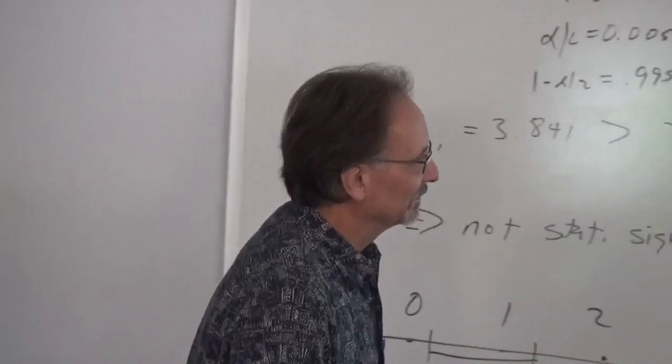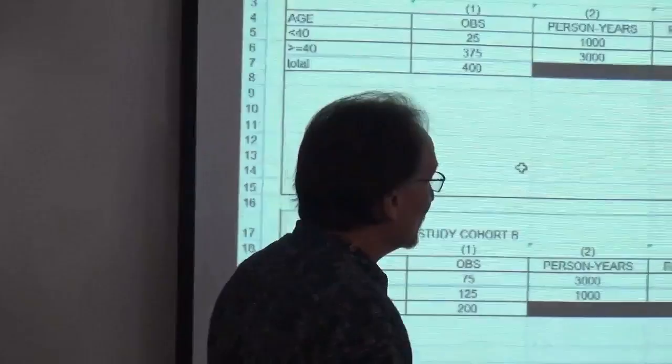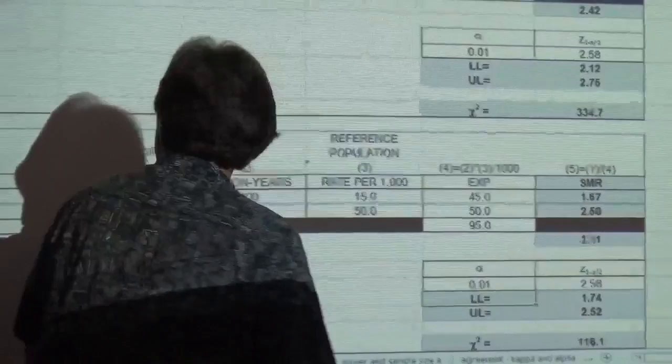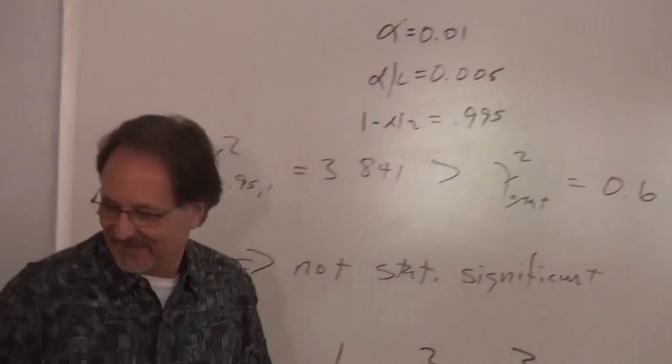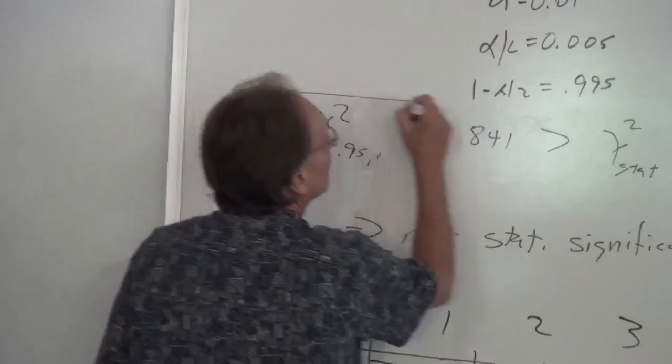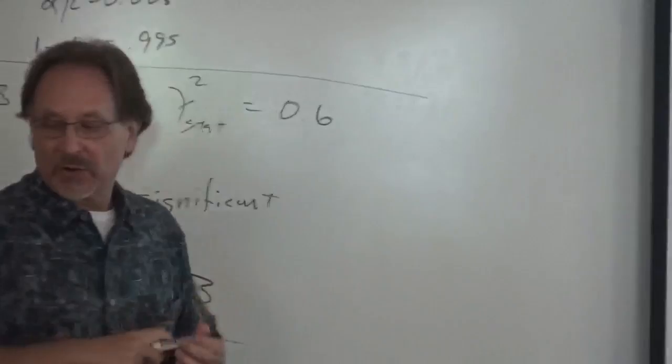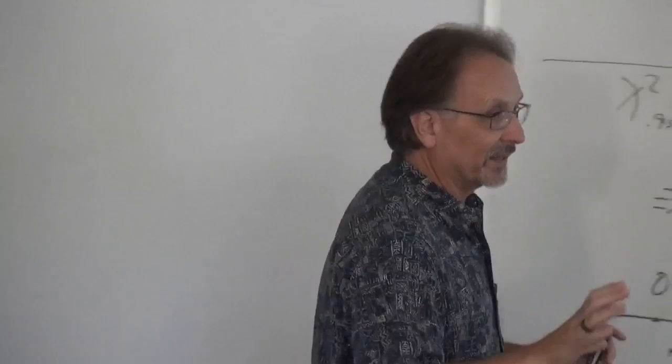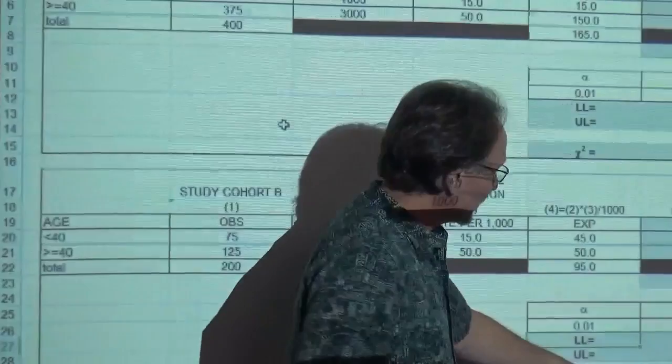Any more questions about this problem? In terms of the test, we're using chi-square, which is what tells us whether or not this is statistically significant. All of the z-score work was just to do the confidence interval. And we can confirm that since our chi-squared values are much greater than the critical value of 3.84, these are statistically significant.